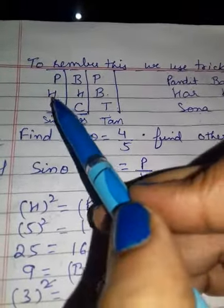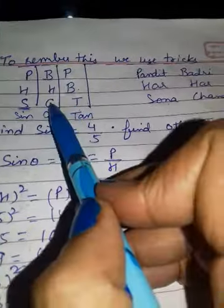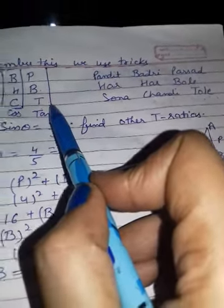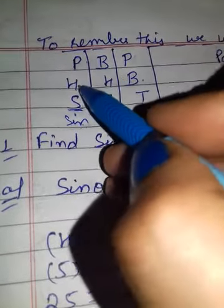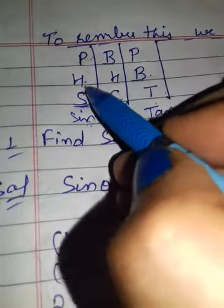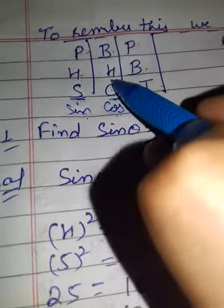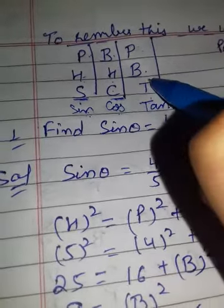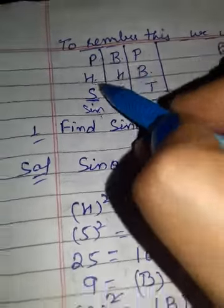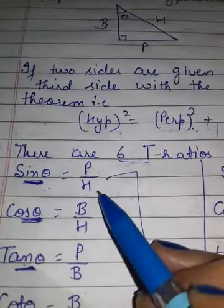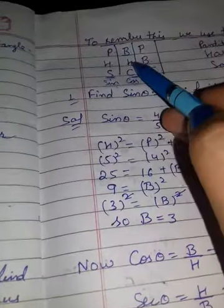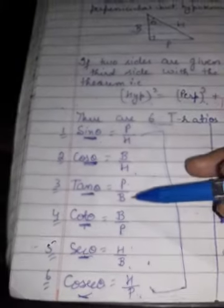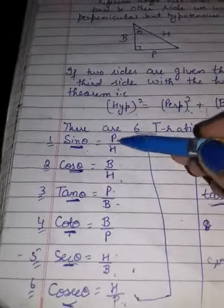S is your Sine, Cos is Chandi, Tan is Tole. Now you will see: Sine theta is P upon H, Cos is B upon H, Tan is P upon B. Sine is P upon H — you can see here. Cos is B upon H. P upon B is your Tan. I hope you are getting from this trick: Pandit Badri Prasad Har Har Bole Sona Chandi Tole.